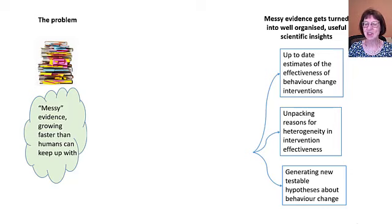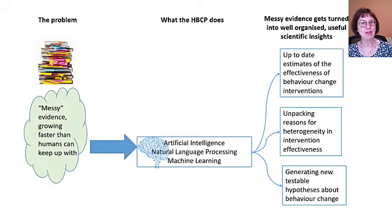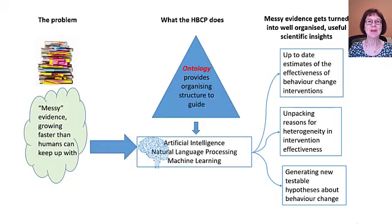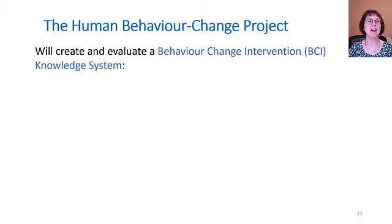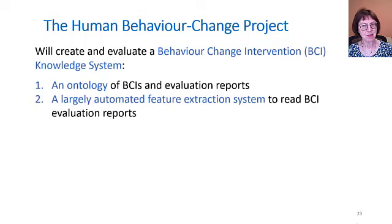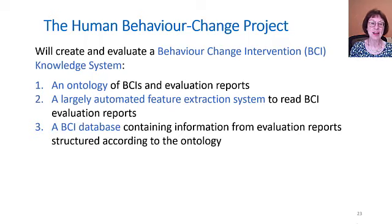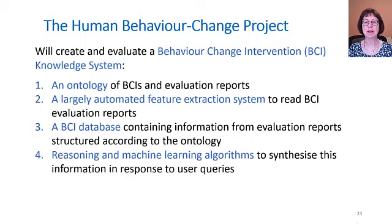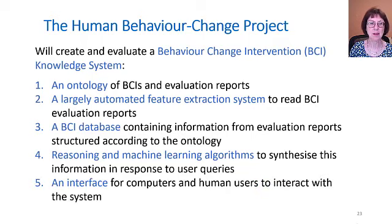The third is of particular interest to me as a behavioural scientist. What does the Human Behaviour Change Project do? It's using artificial intelligence, including natural language processing and machine learning, and it's generating an ontology to provide the organising structure to guide these processes. The project is creating and evaluating a behaviour change intervention knowledge system, consisting of an ontology of behaviour change interventions and of its evaluation reports; a largely automated feature extraction system to read those evaluation reports; a behaviour change intervention database containing information from the evaluation reports structured according to the ontology; reasoning and machine learning algorithms to synthesise this information in response to user queries; and an interface for both computers and human users to interact with the system.